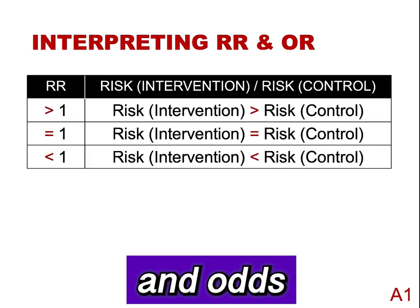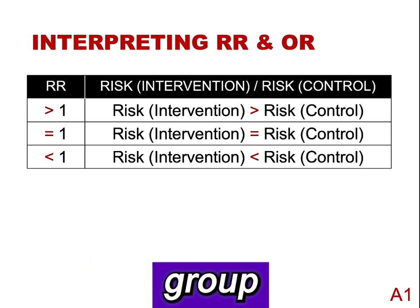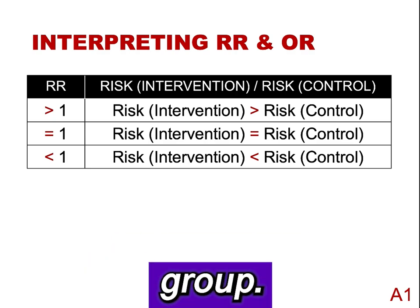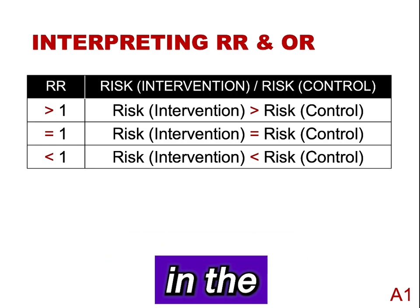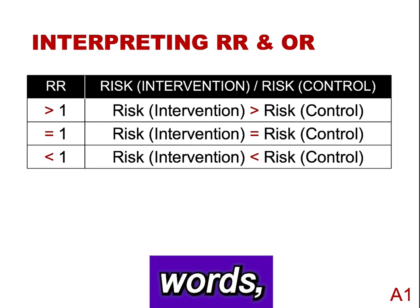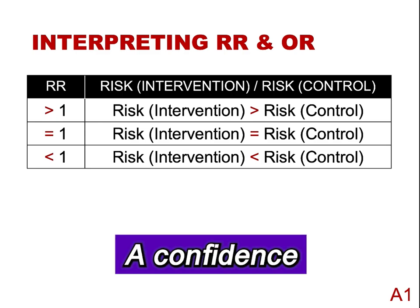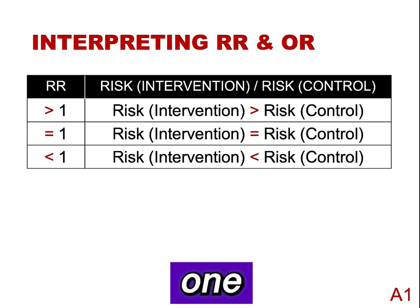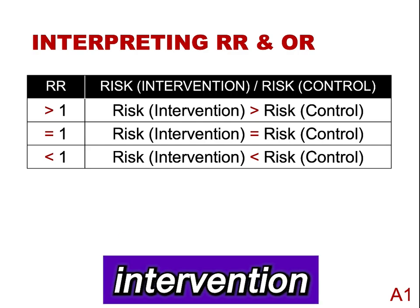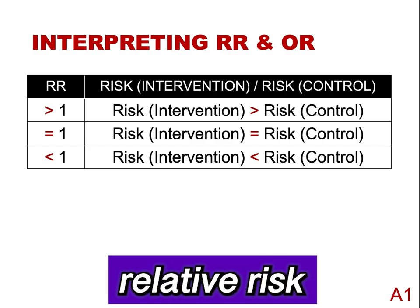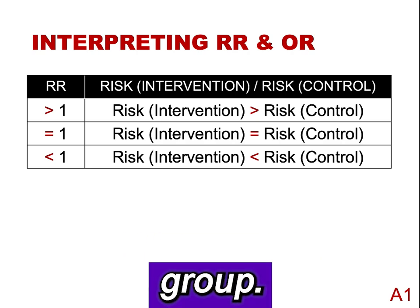How do we interpret relative risk and odds ratios? A relative risk greater than 1 indicates that the risk in the intervention group is greater than in the control group. A relative risk equal to 1 indicates that the risk in the intervention group is the same as in the control group — in other words, there is no difference between the groups. A confidence interval for a relative risk that includes 1 indicates that there is not a statistically significant difference between the intervention and the control groups. A relative risk less than 1 indicates that the risk in the intervention group is lower than in the control group.